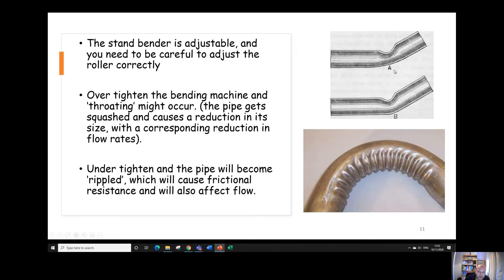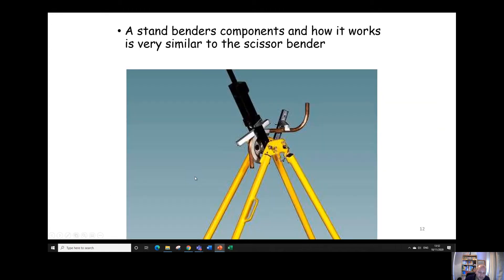If you over tighten it, it can squash the pipe which would cause a reduction in flow rates. If you don't tighten it enough, then it can cause ripples in the pipe when you bend it. That could also cause an increase in frictional resistance and a reduction in flow. All the parts are the same as with the scissor bender. It's going to have a former, also have a back guide there and a roller and a pipe stop.